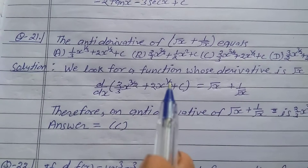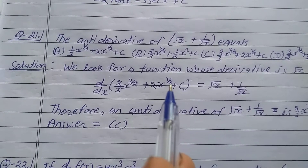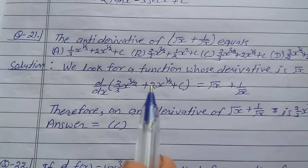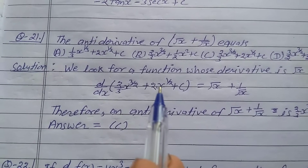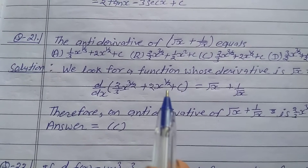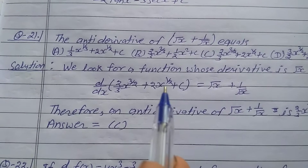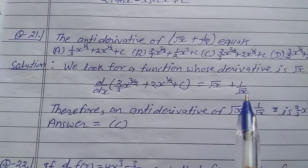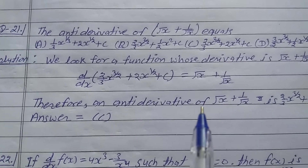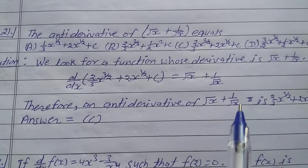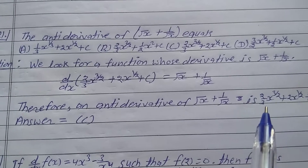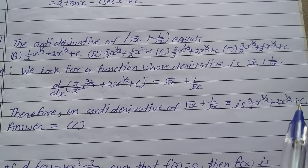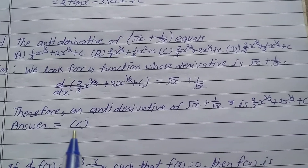Differentiating 2x^(1/2) gives 2 · (1/2)x^(−1/2) = 1/√x. Therefore, the antiderivative of (√x + 1/√x) is (2/3)x^(3/2) + 2x^(1/2) + c, so the answer is option C.